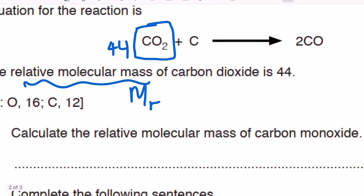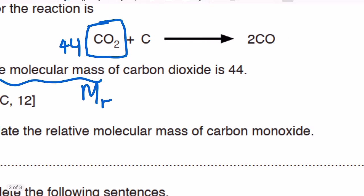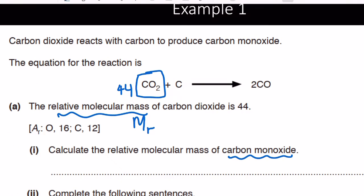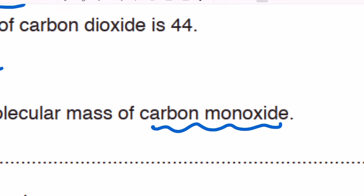Part one asks you to calculate the relative molecular mass of carbon monoxide. Reading the question: carbon dioxide reacts with carbon to form carbon monoxide — so carbon monoxide is the product here, represented as CO in the equation.